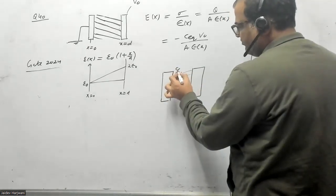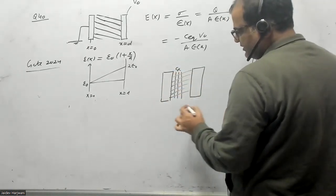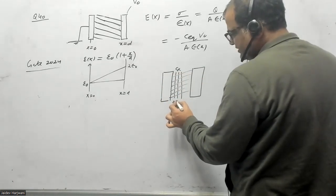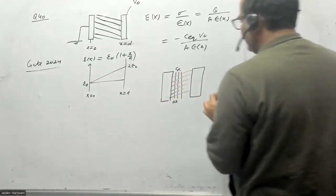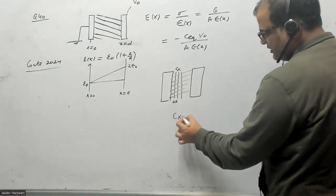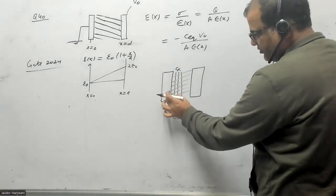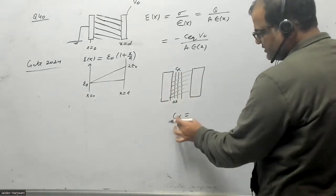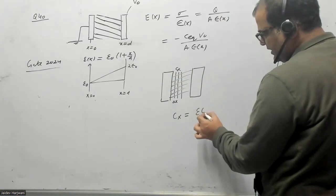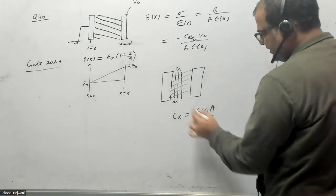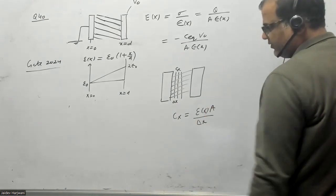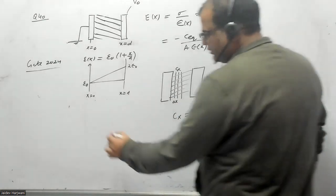Let us take one capacitor where the distance between two plates is delta X. If I want to write C(X), it's a small capacitor because all these capacitors are in series. C(X) is given by ε(X) times A divided by the distance between the plates, delta X.